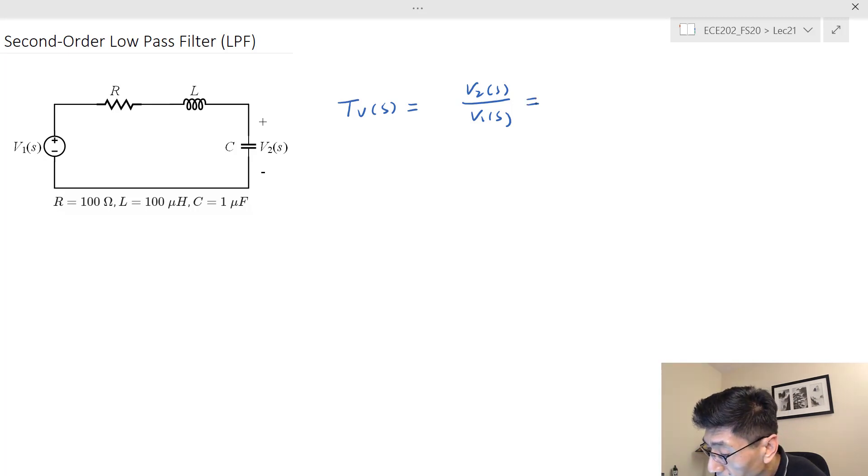Let's look at the transfer function. I hope you can see very clearly this is going to be a voltage division, right? The capacitor impedance is 1 over Cs, that's over the sum of the three impedances: R plus Ls plus 1 over Cs.